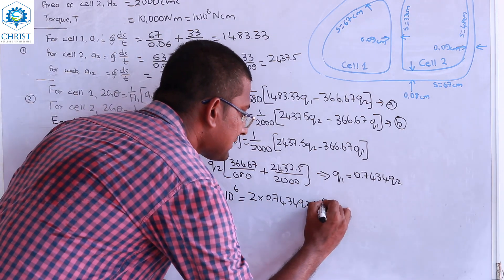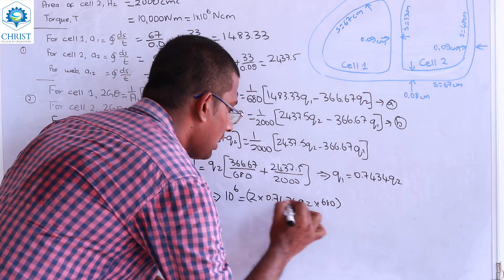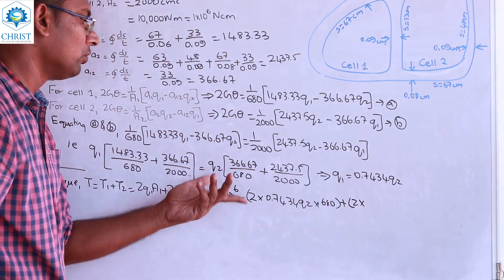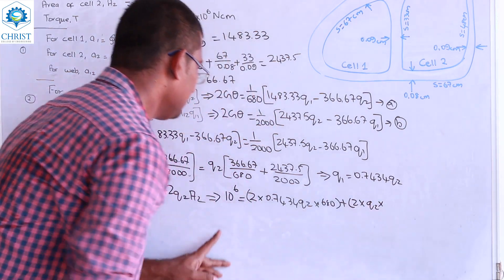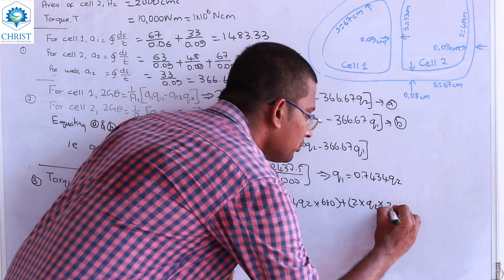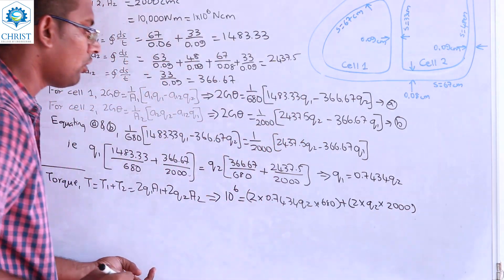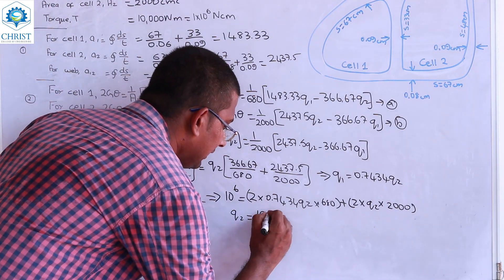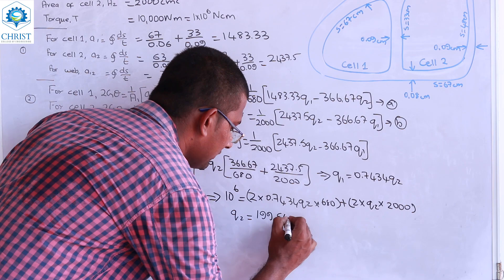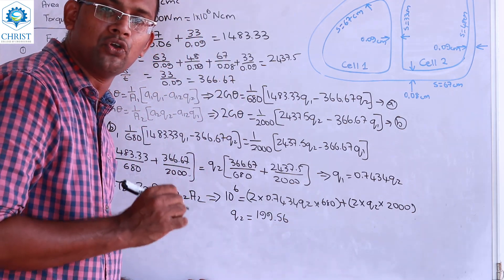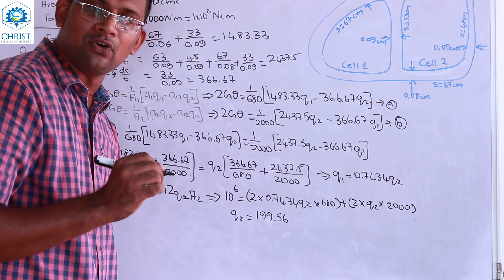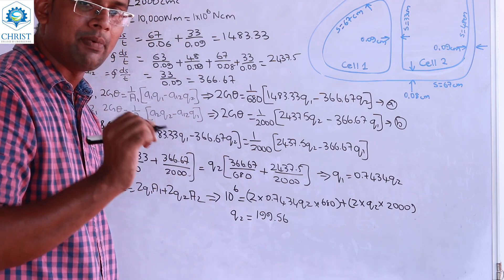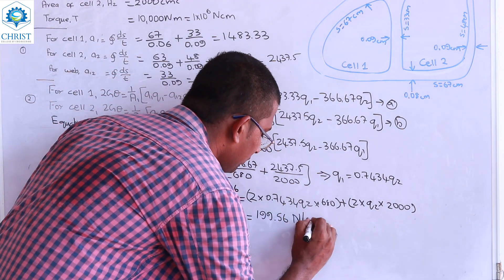Applying the torque equation: Torque equals 2·Q1·A1 plus 2·Q2·A2. Substituting Q1 = 0.7434·Q2, A1 = 680 cm², and A2 = 2000 cm², and solving, we get Q2 equal to 199.56 Newton per centimeter.